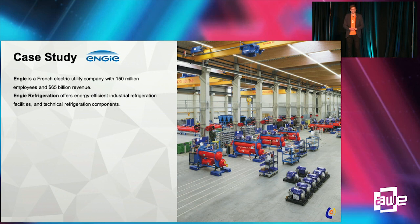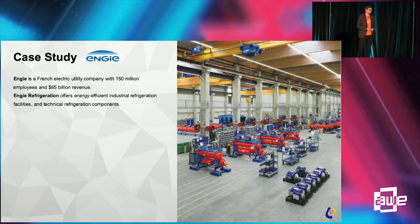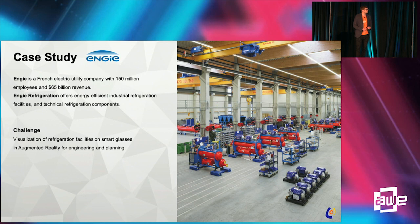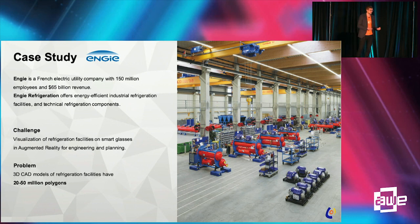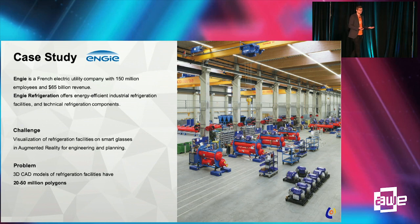There's another company called Engie — a French electric utility company with 65 billion in revenue. We worked together with Engie Refrigeration, who produce refrigeration facilities. They wanted to visualize their refrigeration facilities for engineering and planning purposes. Their 3D CAD models had between 20 and 50 million polygons. The HoloLens, for example, can visualize maybe 800,000 polygons at a high frame rate — if you go more, it crashes completely or becomes very unstable.